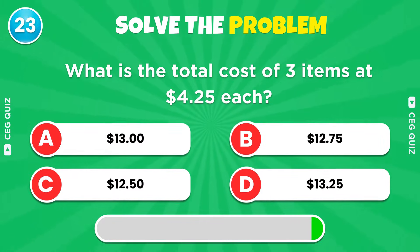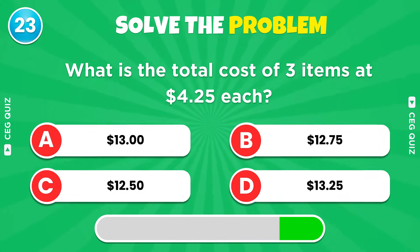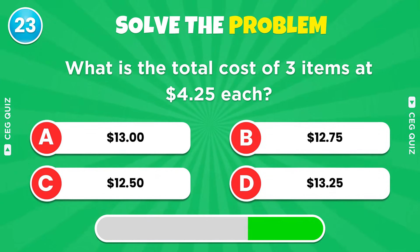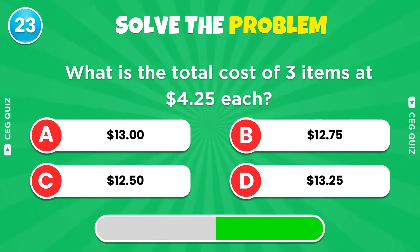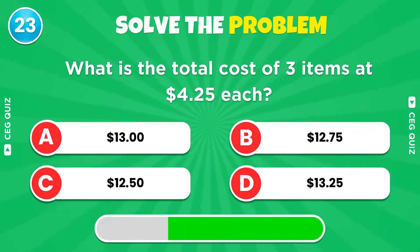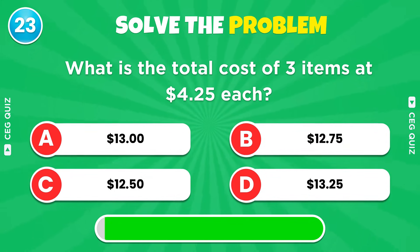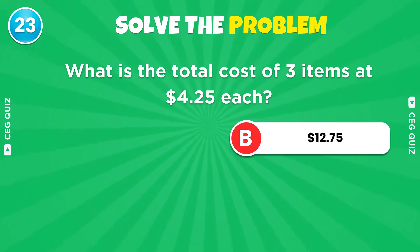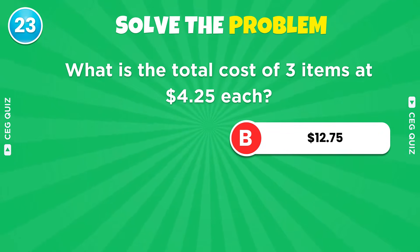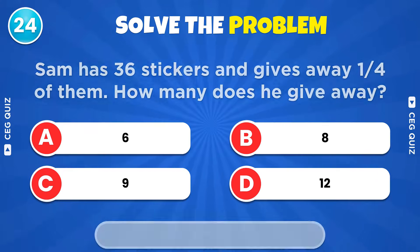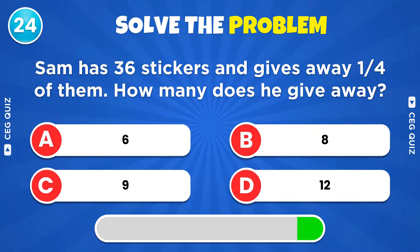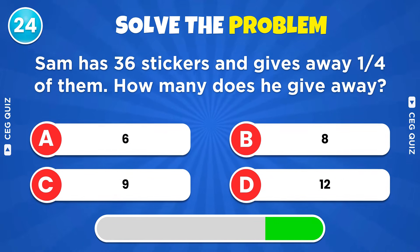What is the total cost of three items at four dollars and 25 cents each? $12.75.